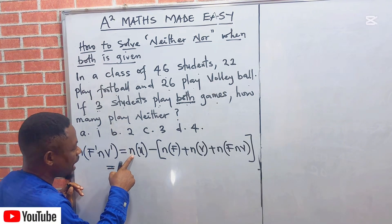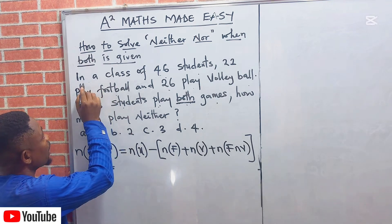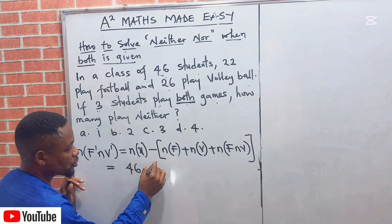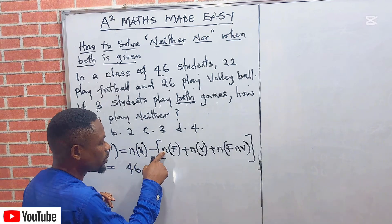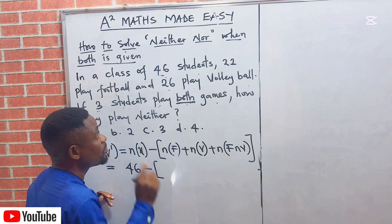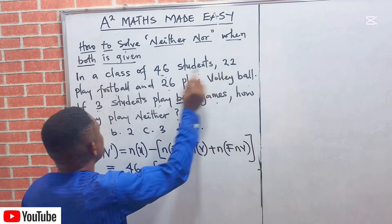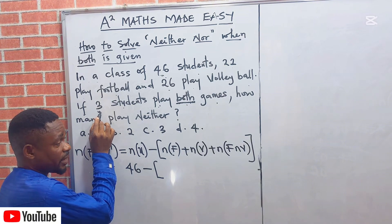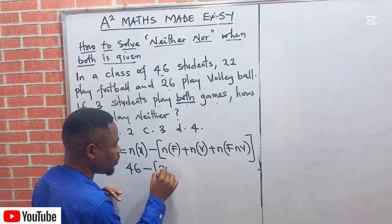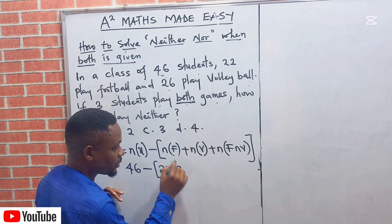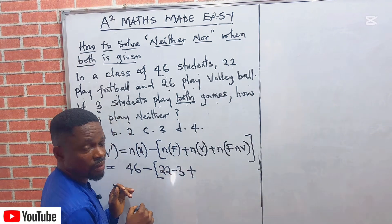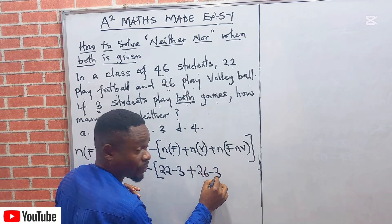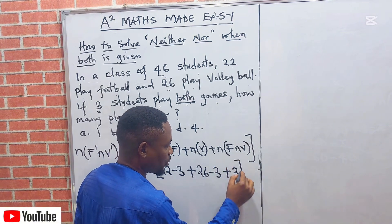Let us now begin to put those values in one after the other. The universal set is given as 46. Then minus, open bracket — the next value is the number that played football only. Football total is 22, but we need 'only', so we take 22 minus 3 (the intersection). Then for volleyball only, volleyball is 26, so we write 26 minus 3. Then plus the intersection, which is 3.